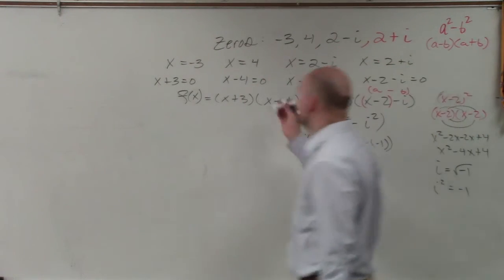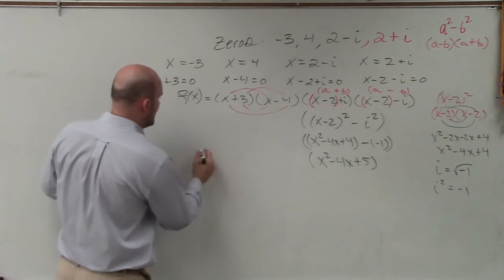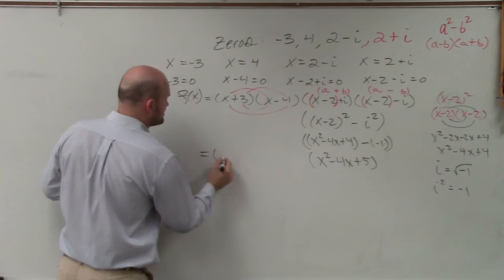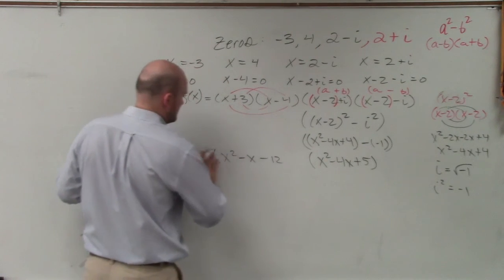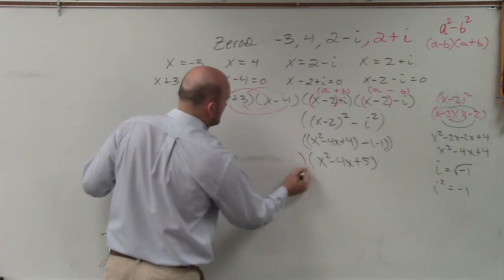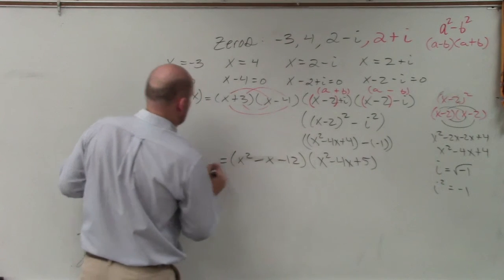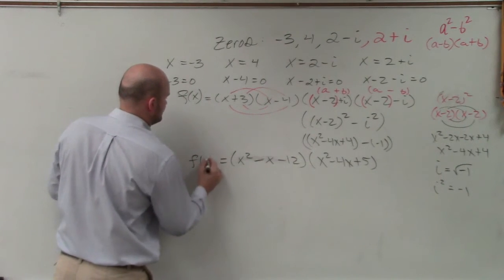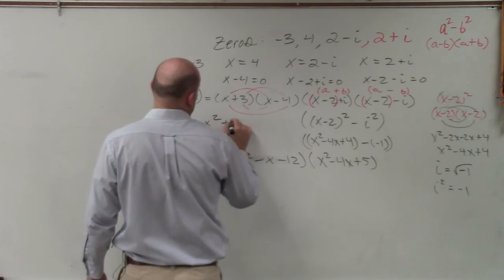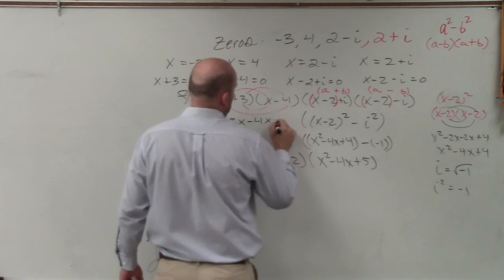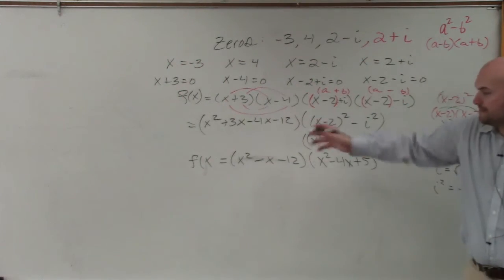Now I can do this multiplication. You can multiply this out, or you should be able to do it in your head. So (x+3)(x-4) becomes x² minus x minus 12. Does everybody agree with me?